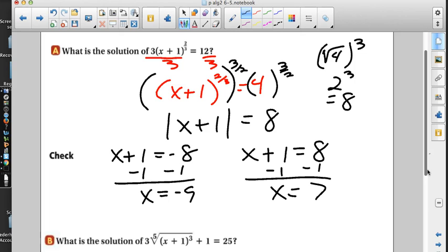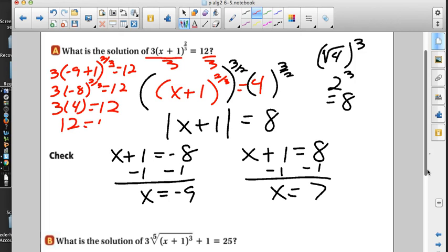One might work. Both might work. Either one might work. We better check. So three times negative nine plus one to the two-thirds equals twelve. Negative nine plus one is negative eight. All right. So negative eight to the two-thirds. That's the cubed root of negative eight, which is negative two. And when I square it, I'm going to get four. Oh, cool. It works. This one's good.